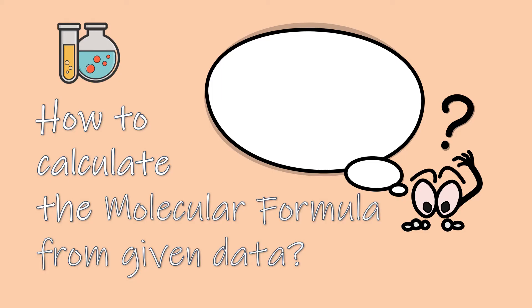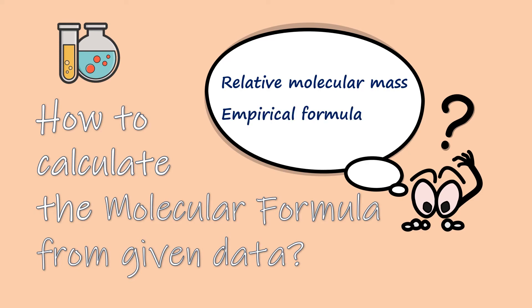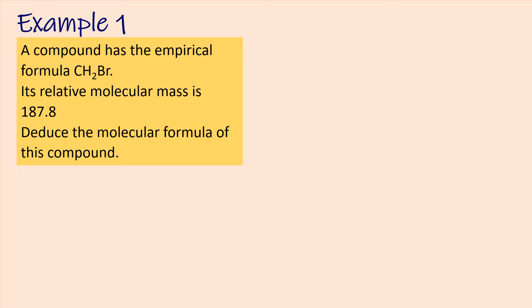In this part of the video you are going to learn how to calculate the molecular formula of a compound using given data. In order to deduce the molecular formula we need to know the relative formula mass of the compound and the empirical formula. Example 1: A compound has the empirical formula CH2Br. Its relative molecular mass is 187.8. Deduce the molecular formula of this compound.